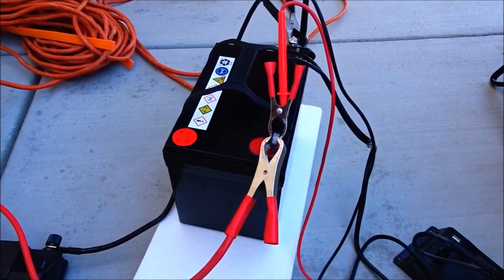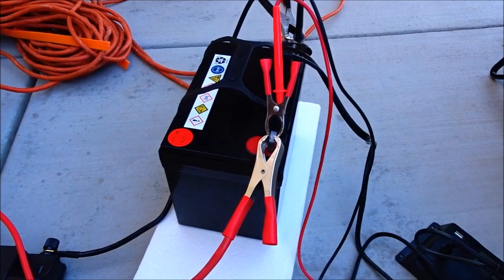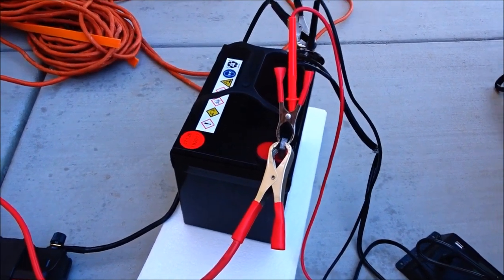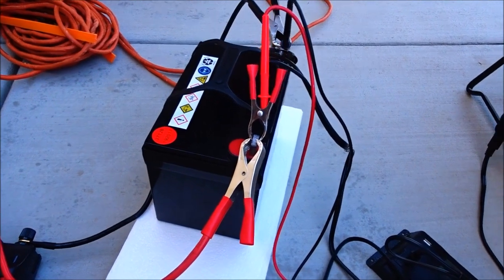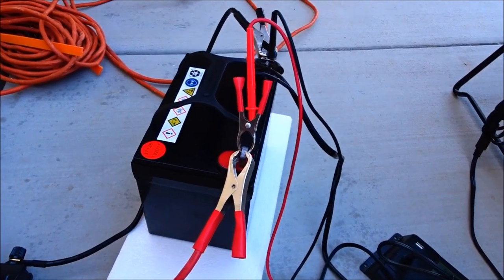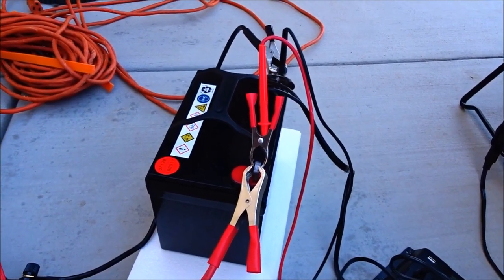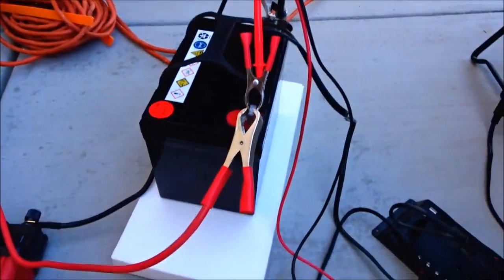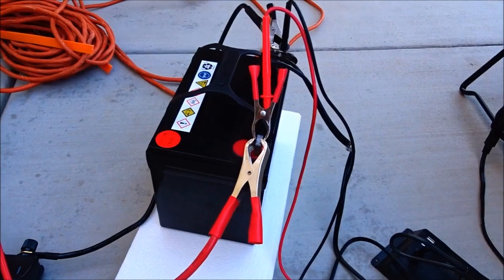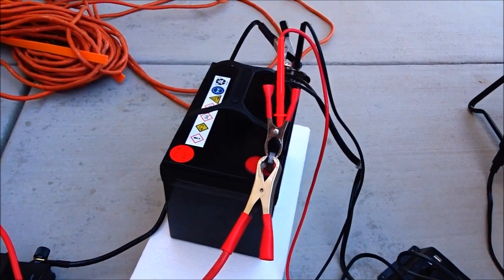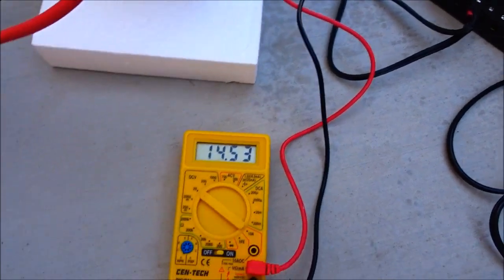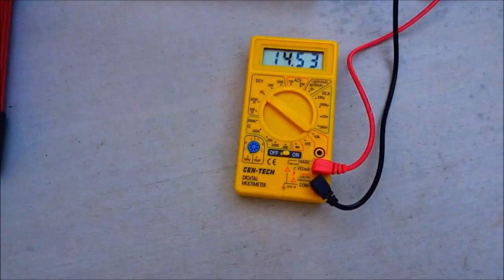If you run them lower than halfway, you're going to kill the battery a lot quicker. And these batteries run with tax, $75, $80 a piece, so you want to take care of them. We have 420 watts of battery, so we're only going to use about 210 of it. And we're still sitting here at 14.5.